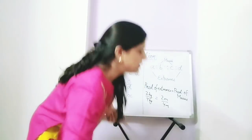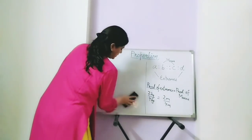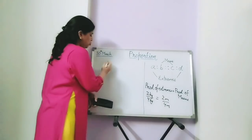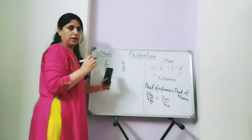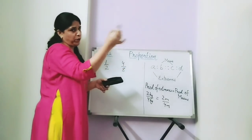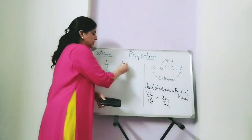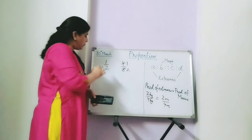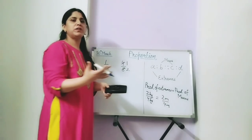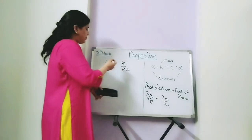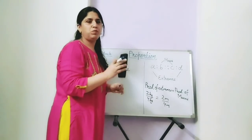The other method is: if we take two ratios like 1 by 2 and 4 by 8, and we want to check whether these two ratios are in proportion, you can simplify — write the ratios in their simplest form. If in the simplest form you get the same ratio, they are in proportion. So there are two ways: first, product of extremes is equal to product of means; and second, change the ratios to simplest form, and if the simplest form is the same, then the ratios are said to be in proportion.